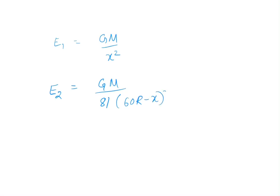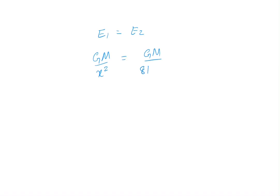Now we just need to equate them. E1 equal to E2. E1 is GM/x² equal to E2 is GM/81 times (60R - x)².